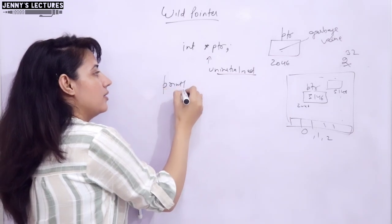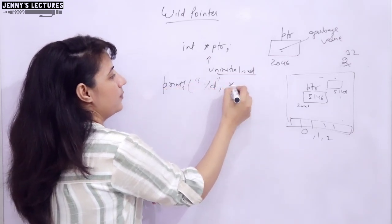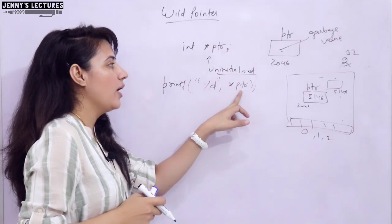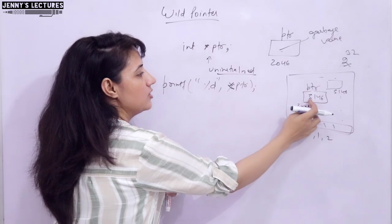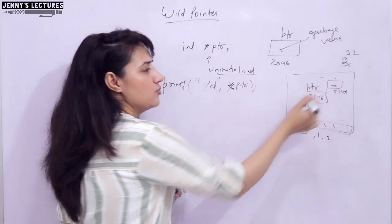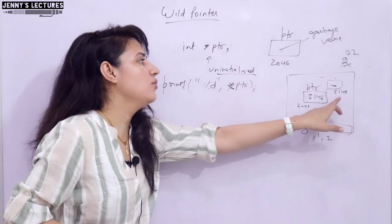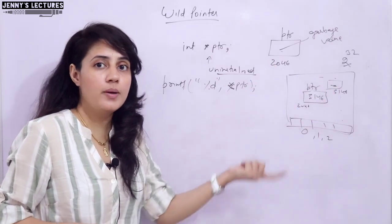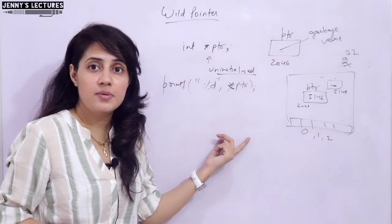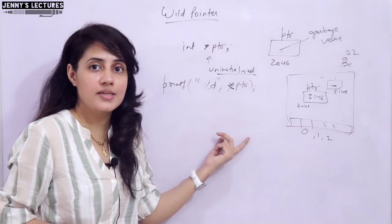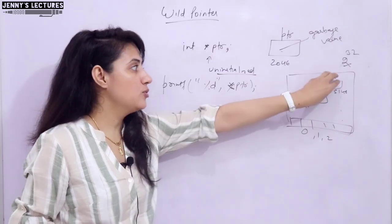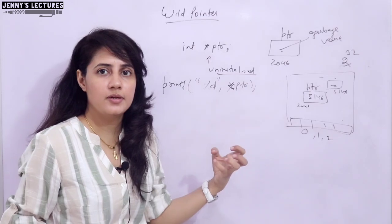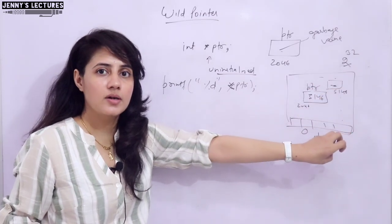And now if you will print this pointer like asterisk PTR, if you want to print whatever the value at this address - address is what? In PTR now, address is 5146. Now value at this address, we don't know what is the value because it's not a valid address. So maybe it will give some garbage value. We don't know what is there at that address, or maybe your program will crash. So it will show some undefined behavior. We can't say what it will print because this block that this pointer is containing address of this block, and this is not consumed memory. We haven't reserved this memory.